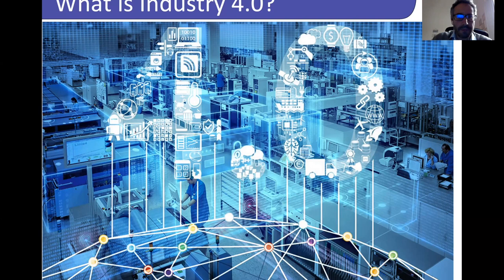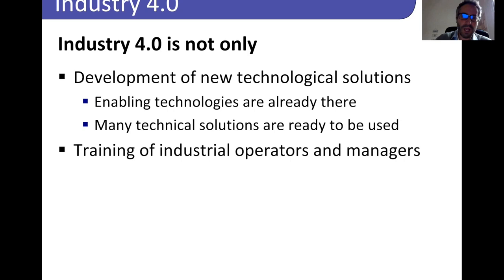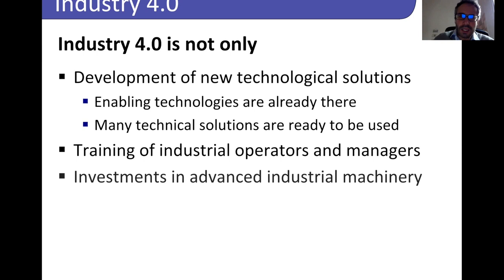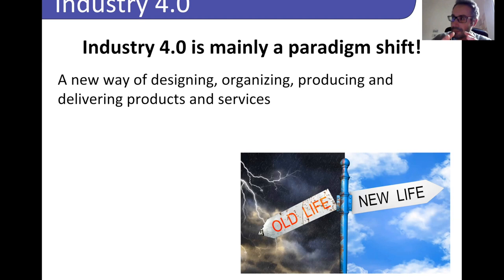But what is Industry 4.0 in practice? Industry 4.0 is not just the development of new technological solutions — enabling technologies are already there and already mature. It is not just training or bigger investments in industrial machinery. Industry 4.0 is more a radical change, a paradigm shift in which a new and disruptive way of designing and organizing production lines, industrial processes, and delivering products and services is expected.